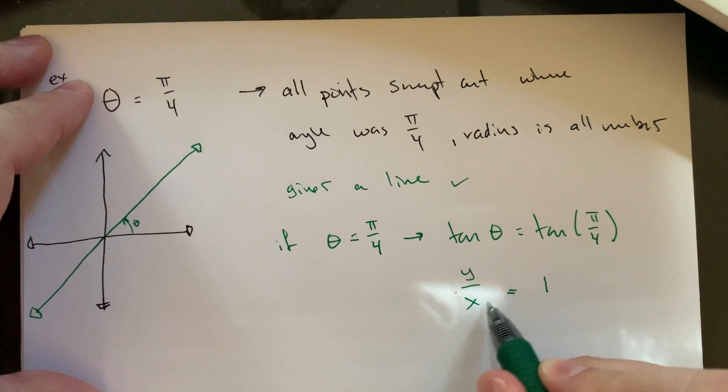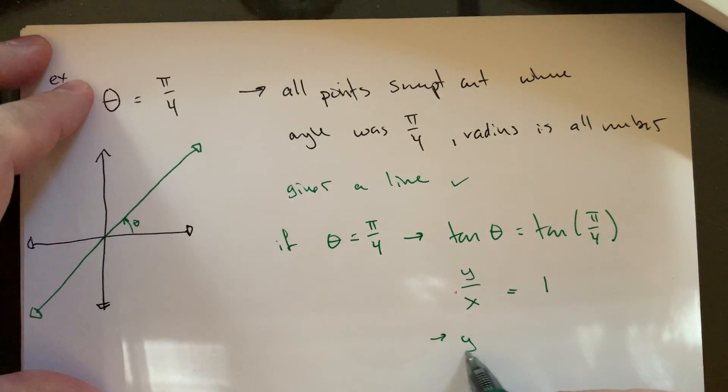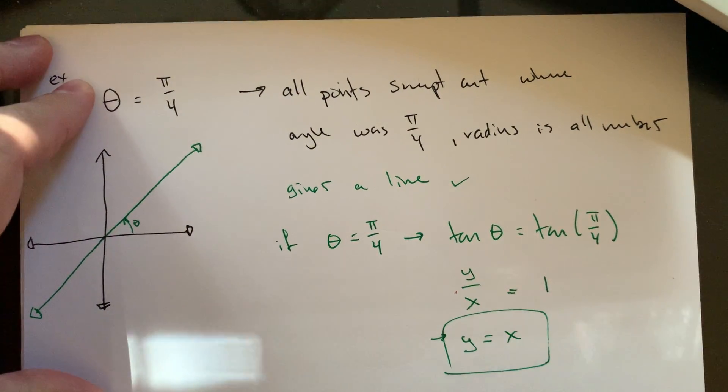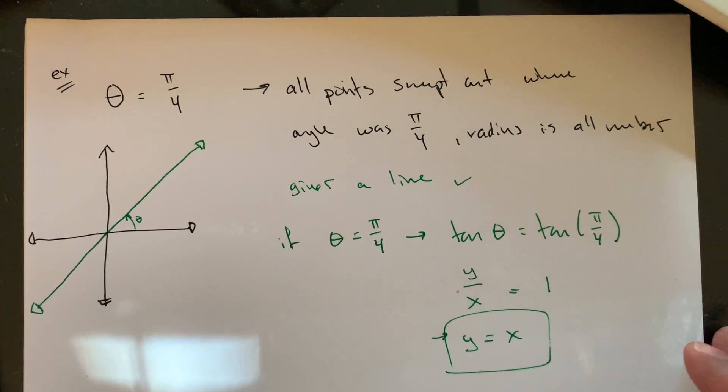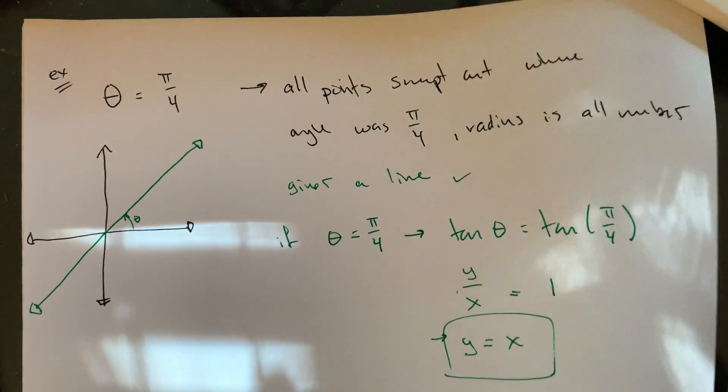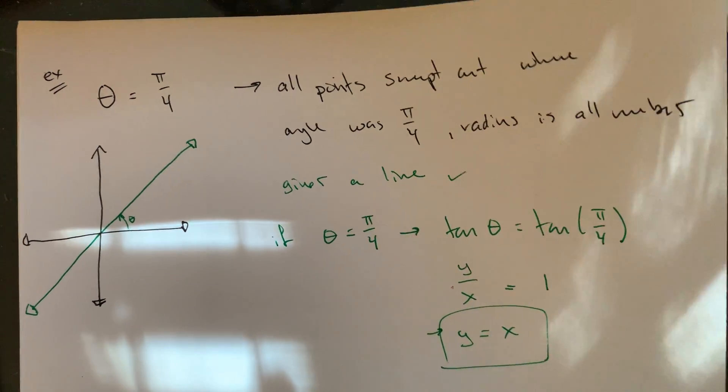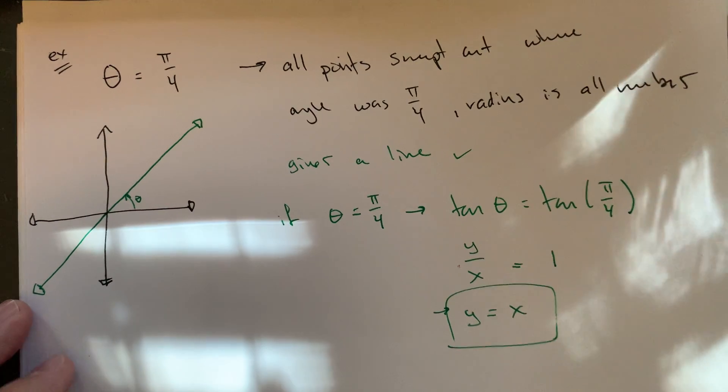So this actually gives, if I cross multiply, this kind of gives me one of our nicest possible kind of linear equations, y equals x. So that's that sort of slope one, you know, y is one times x, going right through the origin.